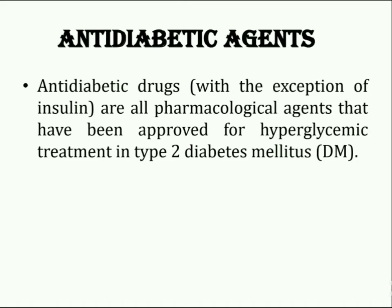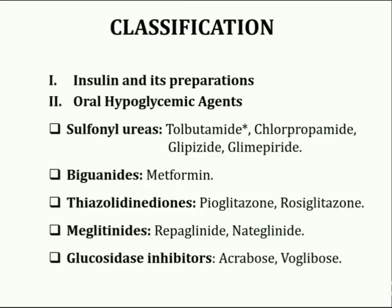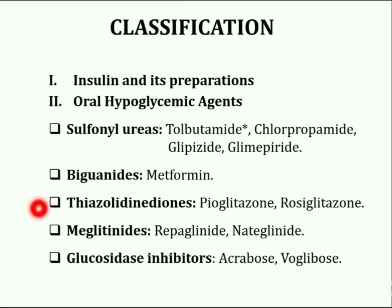These agents are also known as hypoglycemic agents. Classification of antidiabetic drugs includes two main categories: first, insulin and its preparations; and second, oral hypoglycemic agents. Oral hypoglycemic agents are divided into various subcategories according to their structural properties and mode of action: the first subcategory is sulfonylureas, second biguanides, third thiazolidinediones, fourth meglitinides, and fifth glucosidase inhibitors.